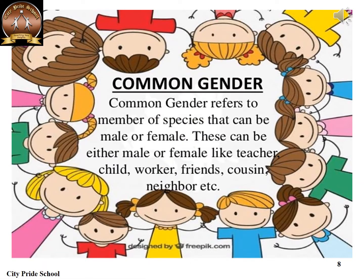Common gender: when nouns could refer to both males and females, they are said to be common gender. Examples: children, worker, teacher, friends, cousin, neighbour. For instance, a teacher could be a male teacher or a female teacher. Similarly, a friend could be a male friend or a female friend. So they are called common genders.